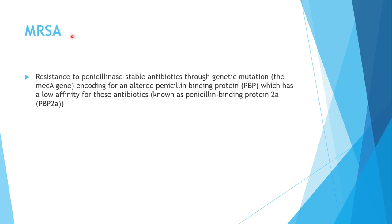A few points about MRSA — methicillin-resistant Staphylococcus aureus. This resistance occurs due to genetic mutation of the bacteria via the MecA gene. The MecA gene changes the penicillin binding protein so that it has low affinity for the antibiotic. The new altered protein is called penicillin binding protein 2A (PBP2A), which has low affinity for traditional antibiotics, rendering them ineffective against the bacteria.